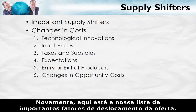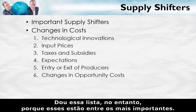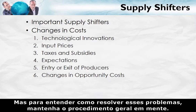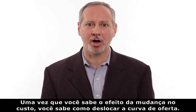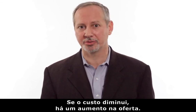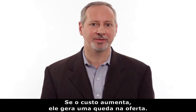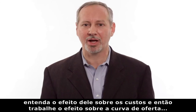Here again is the list of important supply shifters — not the only ones, but among the most important. To solve these problems, keep the general procedure in mind: first, figure out what's the effect of the change on costs. Once you know the effect on costs, you know how to shift the supply curve. If costs decrease, that's an increase in supply. If costs increase, that's a decrease in supply. Figure out the effect on costs, work out the effect on the supply curve, draw the diagram, and you'll be fine.